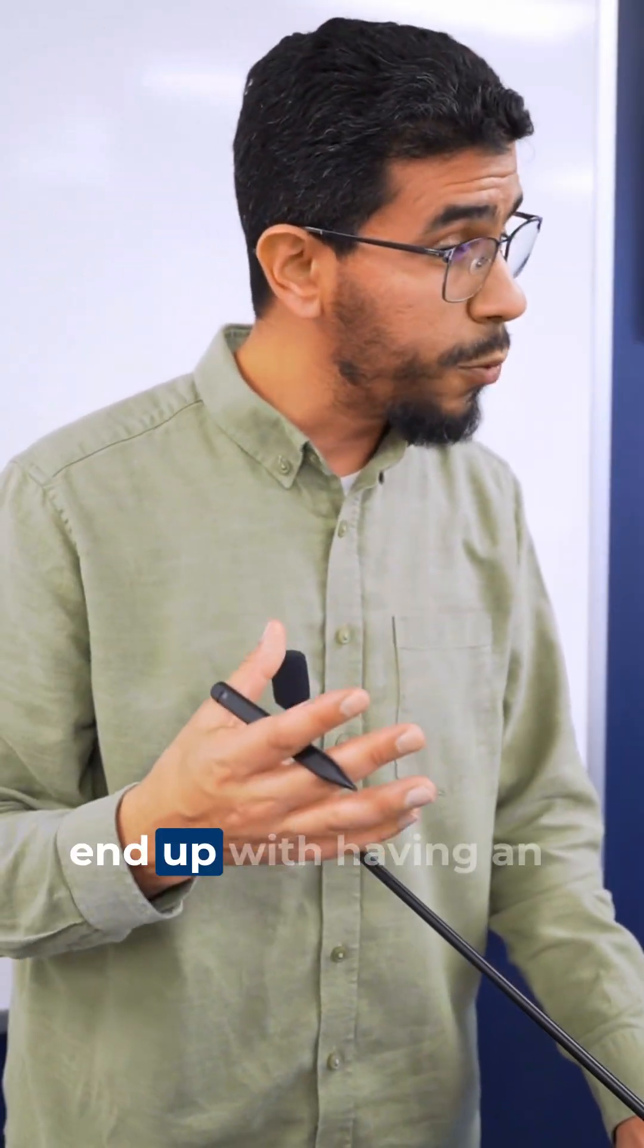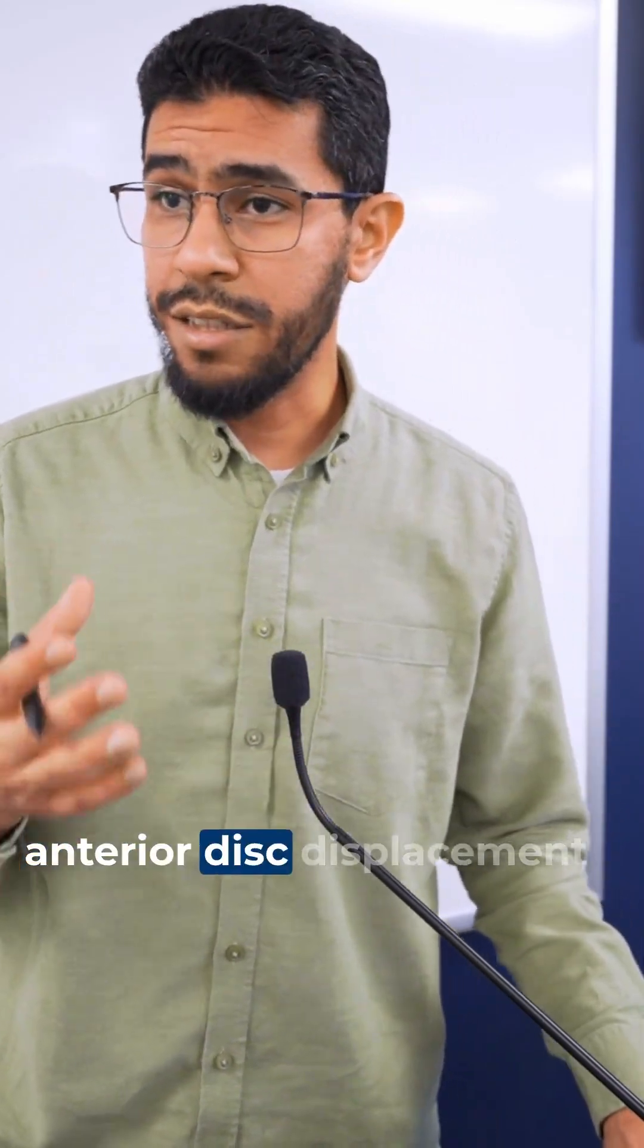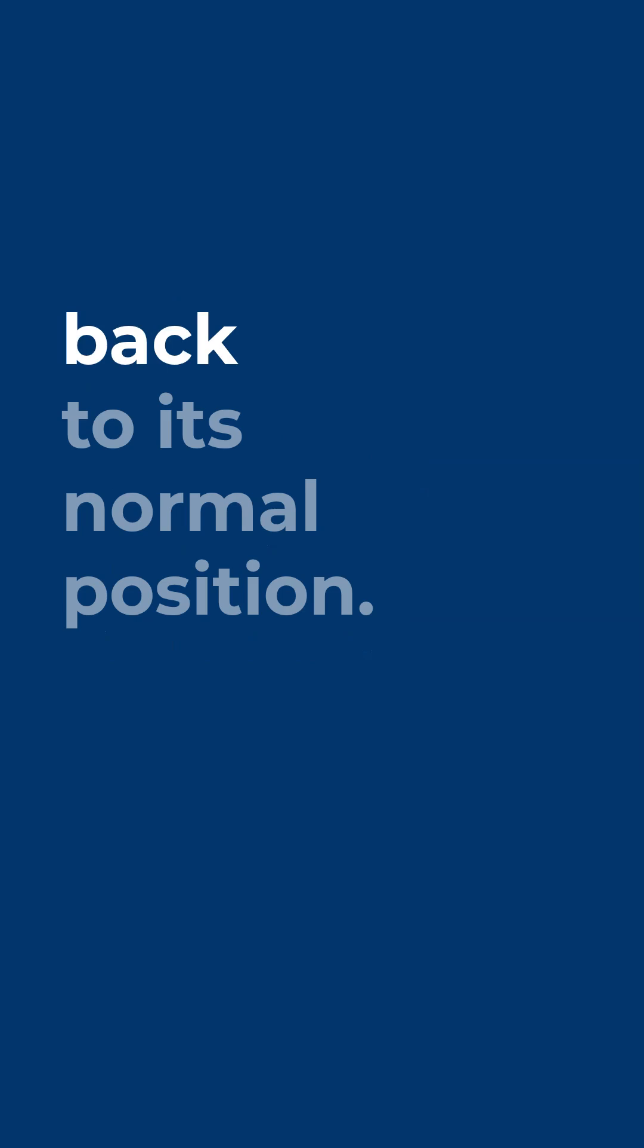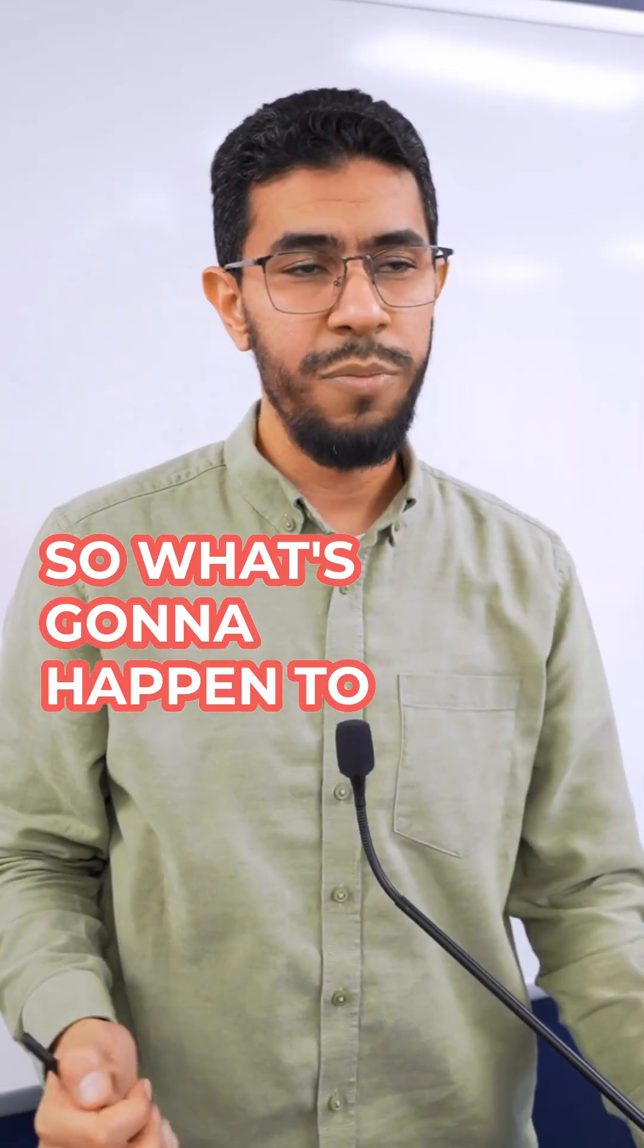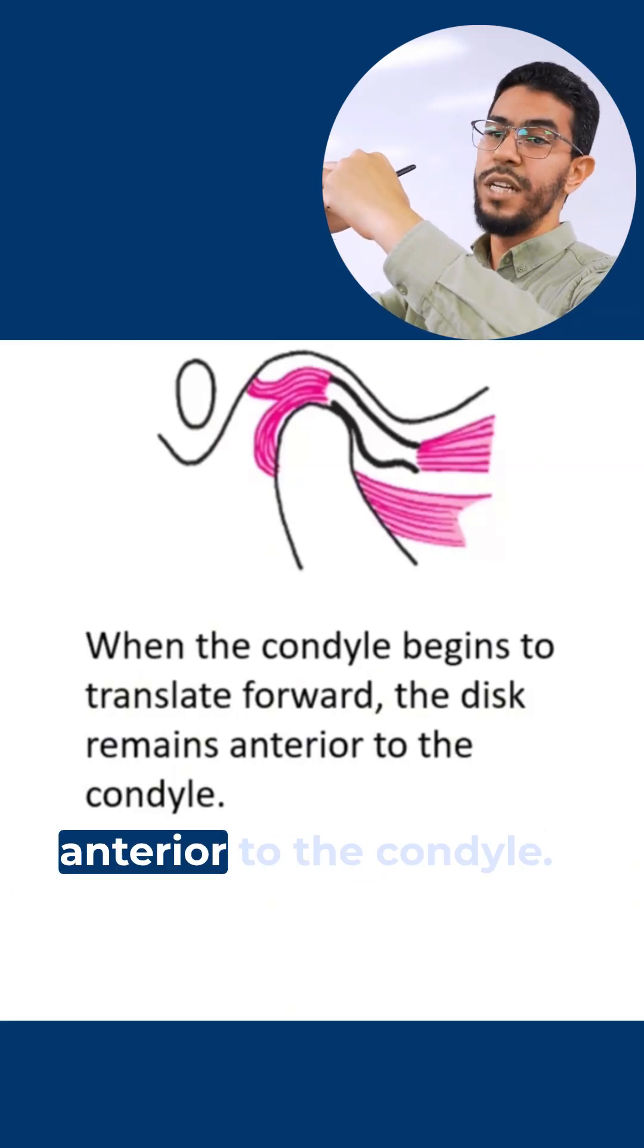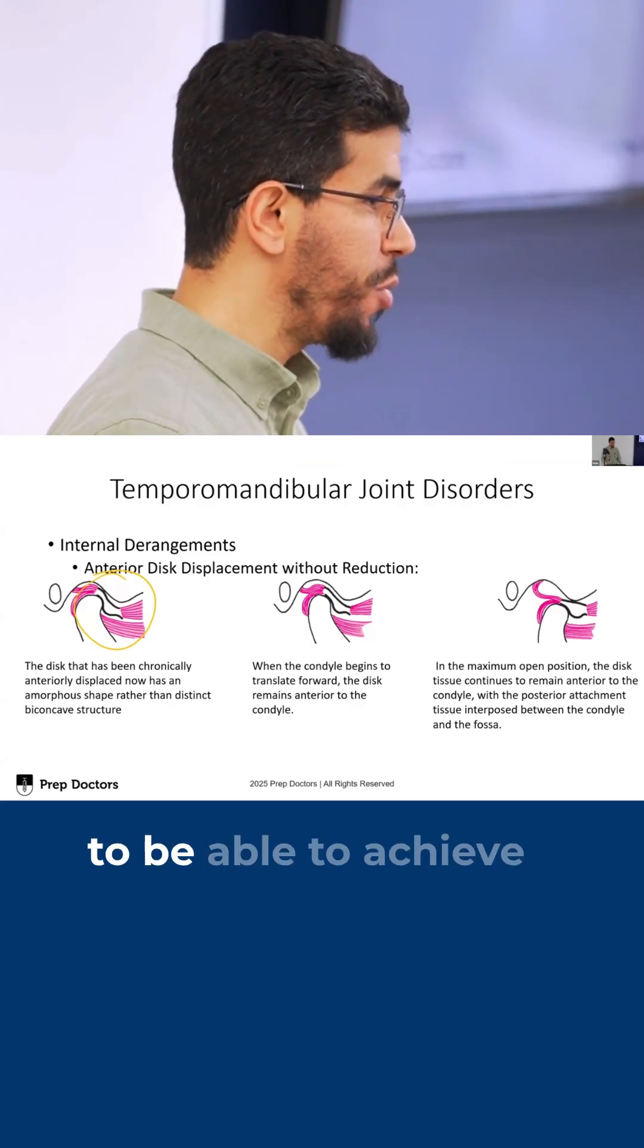This is where we end up with having anterior disc displacement without reduction, because the condyle is not able to reduce back to its normal position. So what's going to happen to the maximal opening? The disc is anterior, the condyle is moving, and the disc is always anterior to the condyle.